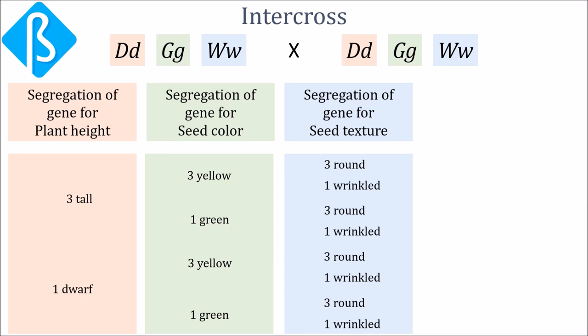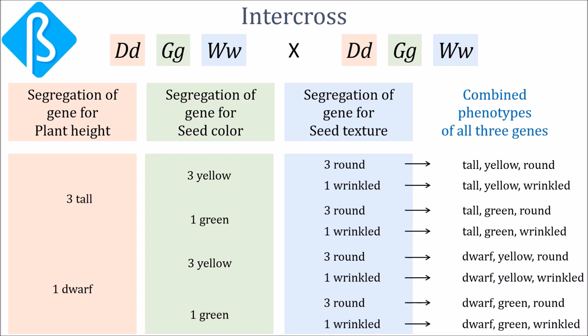Using fork-line method we can combine these separate ratios into an overall phenotypic ratio of the offspring by multiplying them. As a result we get 8 different phenotypes. So that is 3×3×3 = 27 tall yellow round seed plants, 3×3×1 = 9 tall yellow wrinkled seed plants, and so forth.